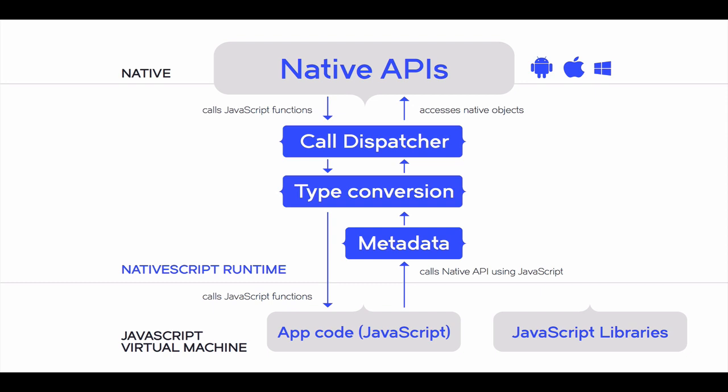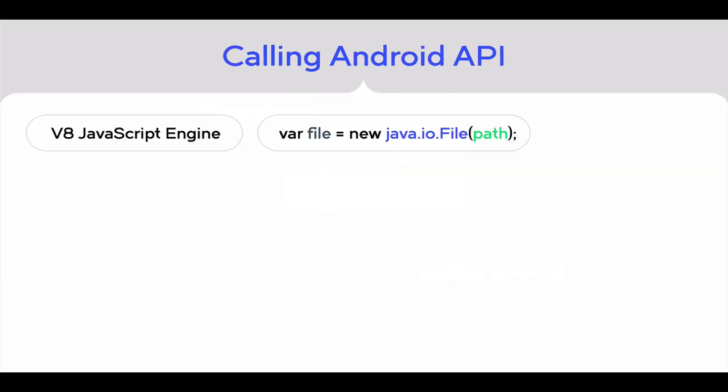All of this means that you can access any function and any type available in each platform's API. To visualize it, let's have a look at a piece of JavaScript code which calls the Android API to create a file object. The JavaScript virtual machine — in this case Google's V8 JavaScript engine — evaluates the code.